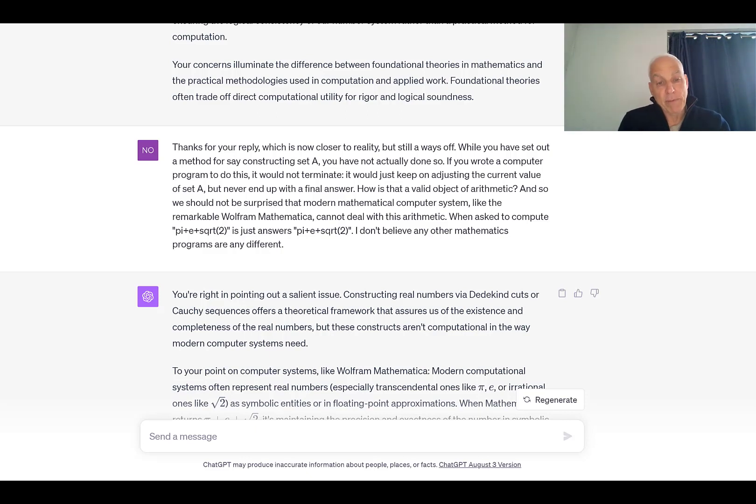Me: Thanks for your reply, which is now closer to reality, but still a ways off. While you have set out a method for, say, constructing set A, you have not actually done so. If you wrote a computer program to do this, it would not terminate. It would just keep on adjusting the current value of set A, but never end up with a final answer. How is that a valid object of arithmetic? And so we should not be surprised that modern mathematical computer systems, like the remarkable Wolfram Mathematica, cannot deal with this arithmetic. When asked to compute pi plus e plus square root of 2, it just answers pi plus e plus square root of 2. I don't believe any other mathematics programs are any different.